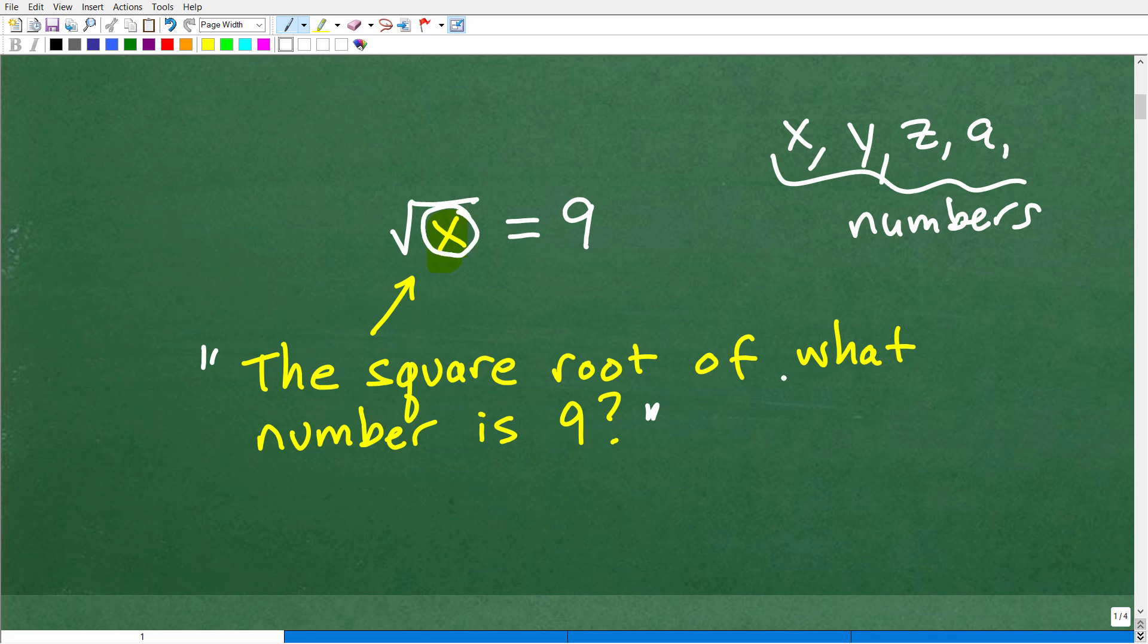So the square root of what number is equal to 9? If I was to ask you, the square root of some number is equal to 9, what's that number? And you'd be like, oh yeah, you know that it's 81. The square root of 81 is 9. I knew that because 9 times 9 is 81. Everyone should know the answer to that. So that's pretty easy, right?